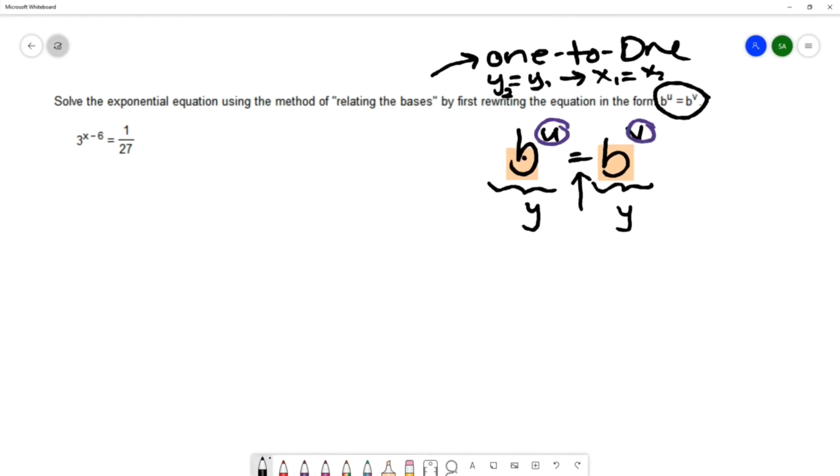And because we have an exponential expression on each side, we can say that these exponents are equal to each other. This works because exponential functions have this one-to-one property. And you can say that when the y values are equal, the x values must be equal.